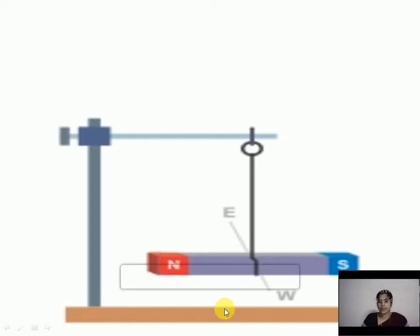Hi students, welcome back to online class. In the last class we discussed about the two properties of magnet — the attractive property of magnet and the second one, the poles of magnet. Today we are going to discuss the third property of magnet, that is the directive property of magnet.